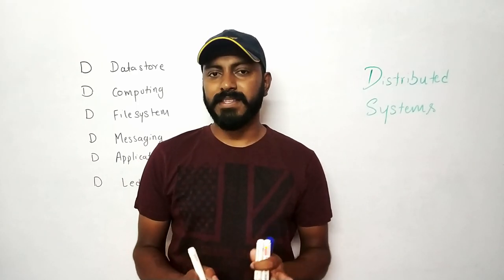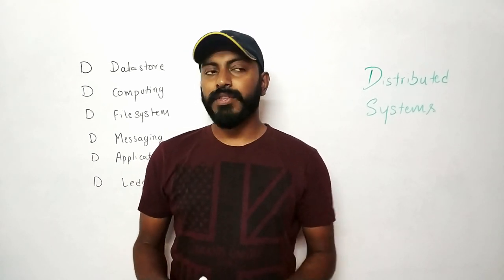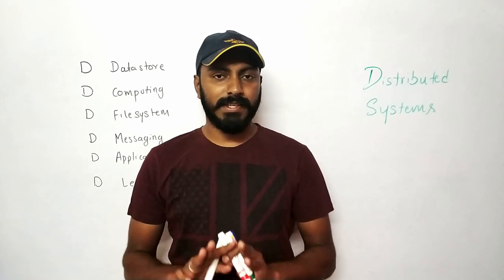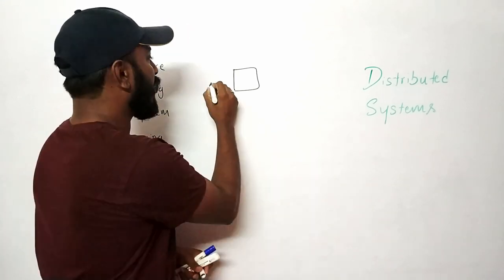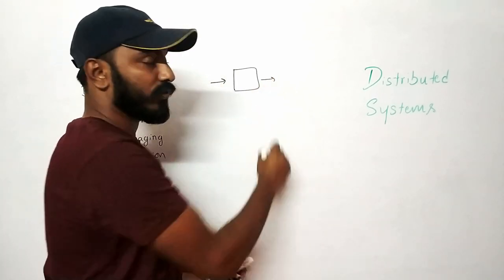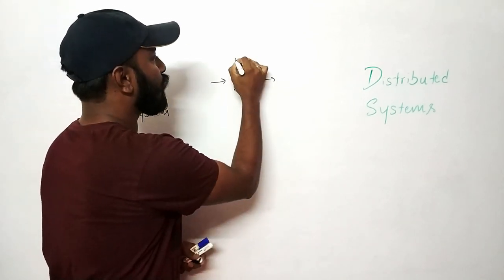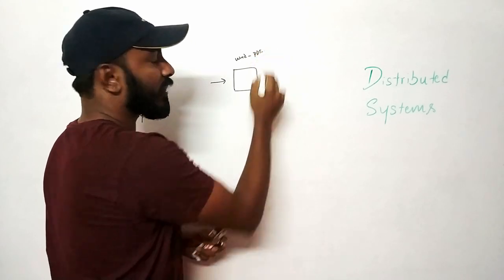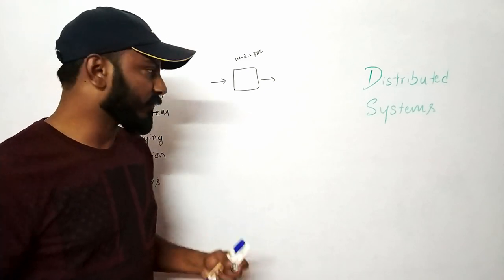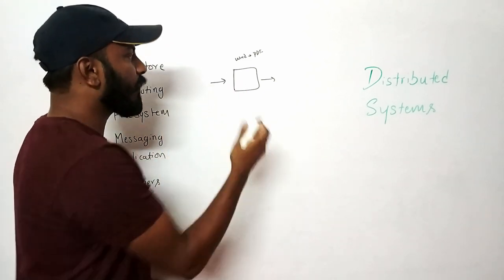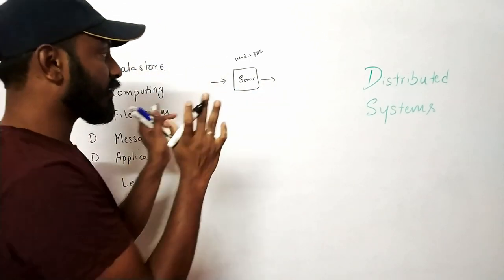I'll take a couple of examples to help you understand why you need distributed systems. The first example: say you have a service that takes a request and gives out a response. It's a simple system — what it does is convert a Word document to PDF. There are a lot of online services which do that. So this is the service you're running, and you have one server to accomplish this particular task.